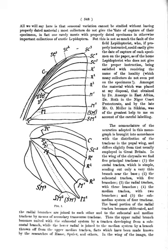Claviform stigma: specifically in noctuid moths, an elongate spot or mark extending from the anterior transverse line through the submedian interspace, toward and sometimes to the posterior transverse line.